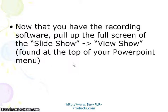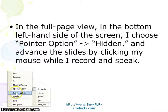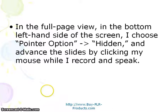Now that you have the recording software, pull up the full screen of the slideshow. Go to the top of the PowerPoint menu, click Slideshow, then View Show, and that will pull up the full screen. In full-page view, on the left side of the screen there's a pointer option — you can hide it if you want. All you do to advance the slides is click your mouse while you're recording and speaking.